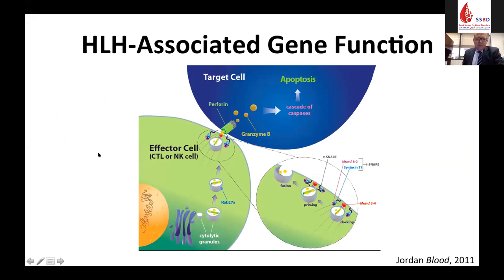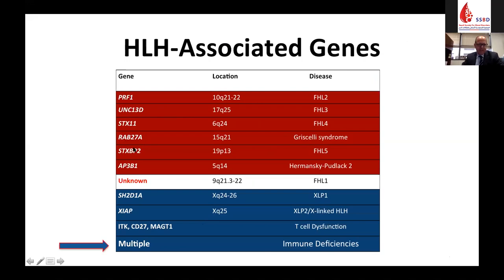The pathophysiology of HLH involves a defect in effector cell function — cytotoxic T cells or NK cells. These cells create cytotoxic granules, get packaged, punch holes in the infected target cell, and perforin with granzyme is injected to create apoptosis. Virtually every step along this pathway has associated genes linked to HLH: perforin, MUNC13, Syntaxin, and in Griscelli syndrome, RAP27A. Additionally, T cell functional genes such as XLP, when defective, can also lead to HLH, and multiple immune deficiencies have been associated with HLH.